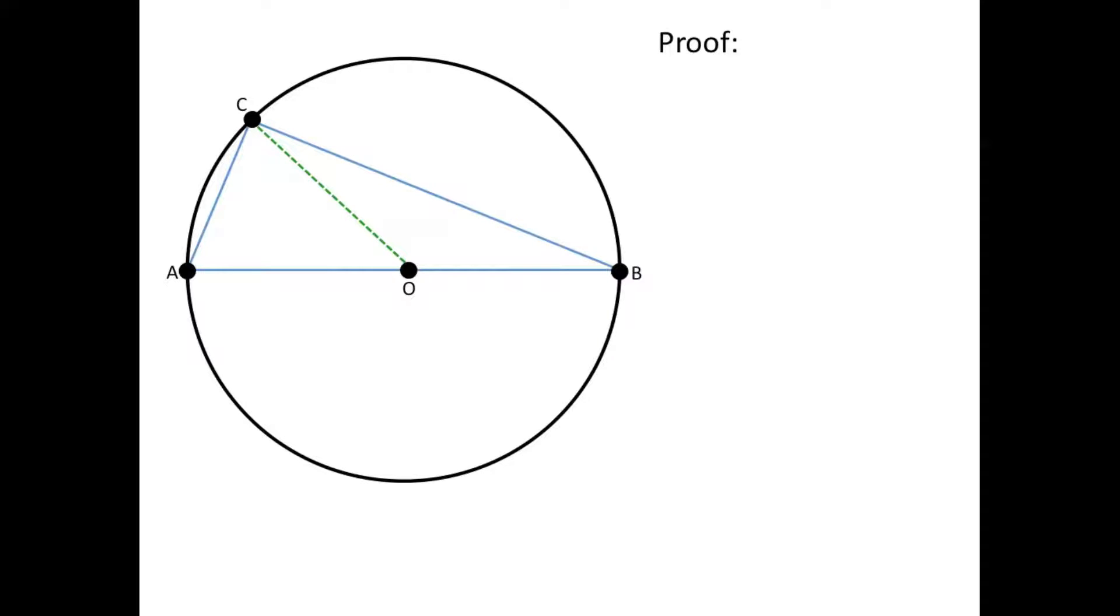So first thing I want to do is I'm going to connect O to C as you can see with the green dotted line, and when I did this you'll notice that the line OA is equal to OC because both of these lines represent the radius of the circle, because the radius is the line drawn from the center to any point of the circle.